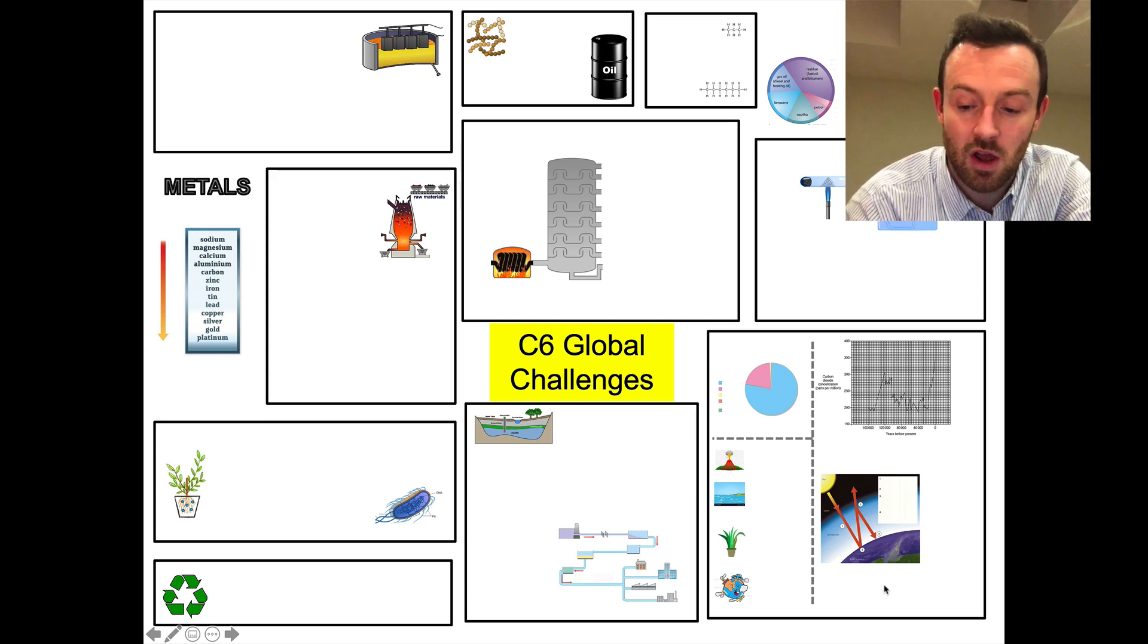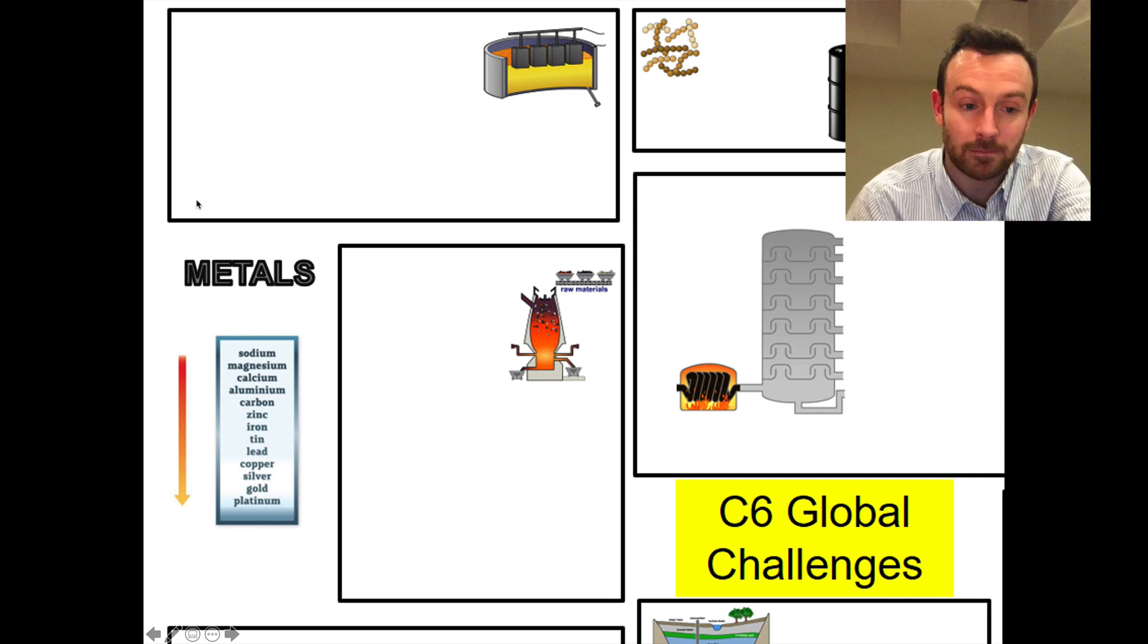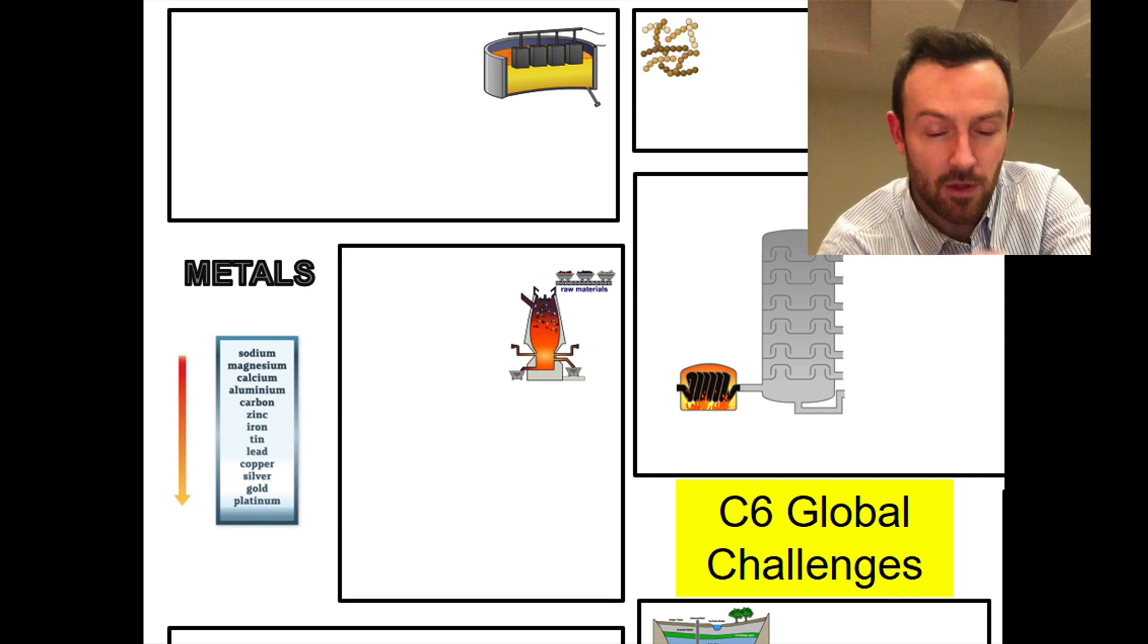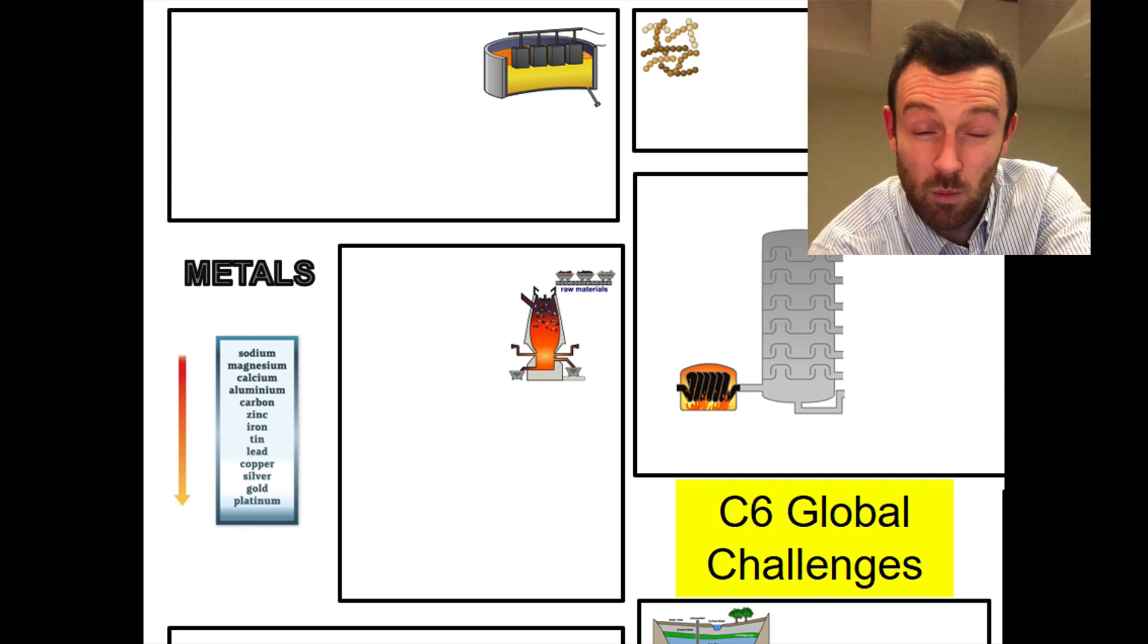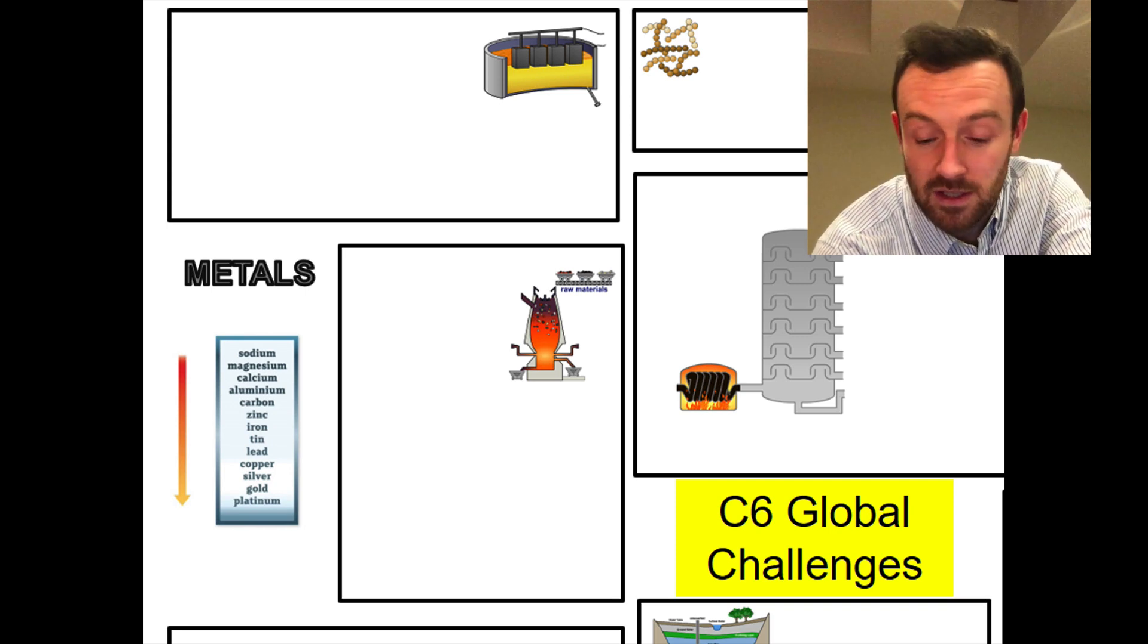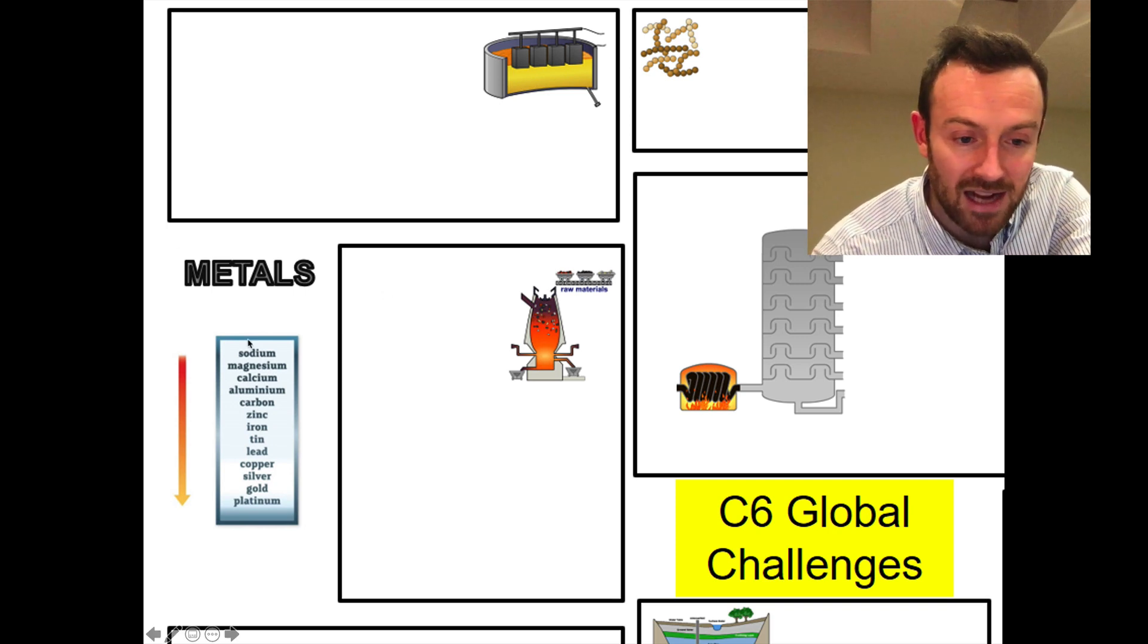If you print this out in A3 then you can fill in all the little bits as we go. So we're going to start by looking at metals over here. I'm going to zoom in a little bit. The unit covers the extraction of different metals and why they have to be extracted in different ways.